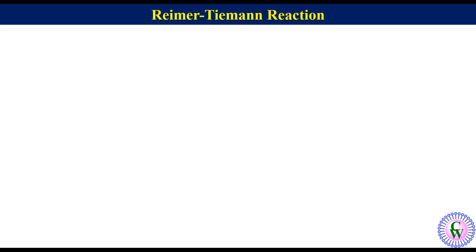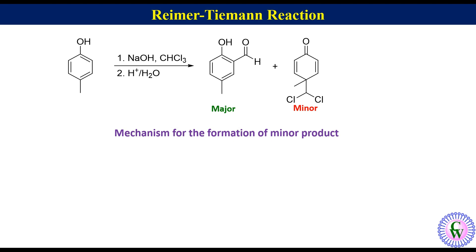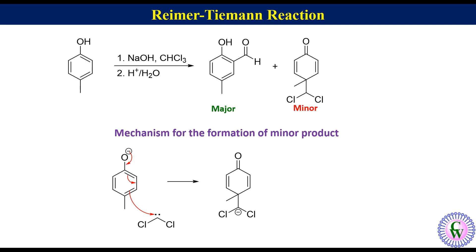An interesting example is the Reimer-Tiemann reaction of para-cresol. The 2-formyl product is formed as the major product, while 4-dichloromethyl-4-methyl-cyclohexa-2,5-dienone is the minor product. Under alkaline conditions cresol exists as phenolate ion. Addition of dichlorocarbene to the para position gives an anionic intermediate that does not have tendency to aromatize because of the methyl group. A water molecule in the reaction mixture protonates the carbanion to produce the minor product.